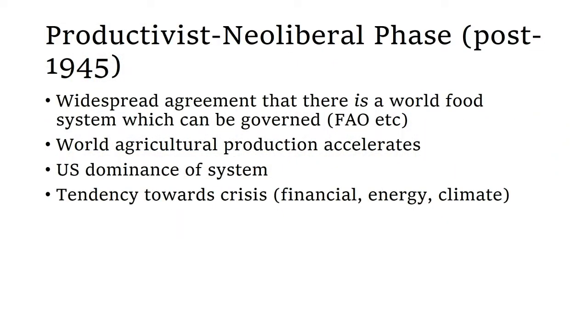Finally, there is a muddy, messy productivist and neoliberal phase. Broadly speaking, since World War Two there is widespread agreement that there is such a thing as a world food system which can be managed, steered, or governed by things like the FAO. World agricultural production accelerates again. This phase is also associated with American dominance of the world food system in terms of its capacity to use its surplus for geostrategic ends. There's also a tendency towards food crises — seen in the 1970s, post-World War Two, and also today — these compound rolling crises of financial, energy, and climate factors all interwoven.